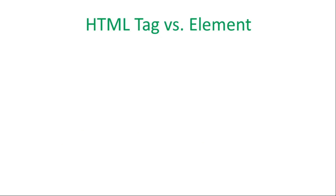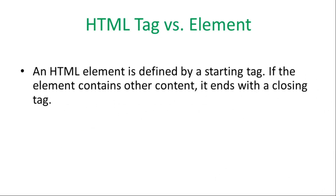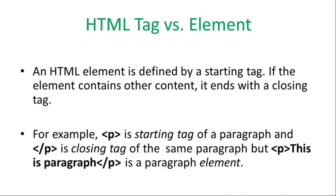The HTML element consists of a starting tag, content, and closing tag — these three things make up an HTML element. To arrange HTML elements on our web page, look at the example: a paragraph tag. We open the starting tag, then add the content, and then close it.